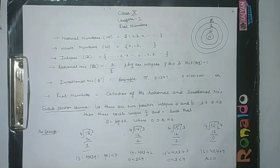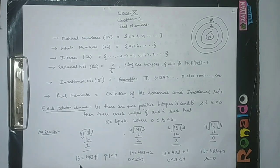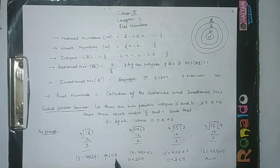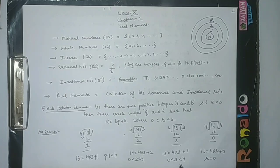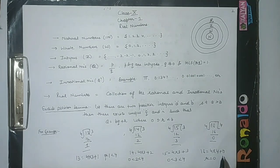Let us understand by taking an example. If we divide 13 by 4 then the quotient is 3 and the remainder is 1. So we can write 13 as equal to 4 into 3 plus 1. The remainder 1 lies between 0 and less than the divisor. If we divide 14 by 4, quotient is 3, remainder is 2. Again 14 equals divisor into quotient plus remainder. If we divide 15 by 4, the remainder is 3, less than 4. And if we divide 16 by 4, the quotient is 4 and the remainder is 0. So in these 4 cases, the remainder is either 0 and always less than the divisor.